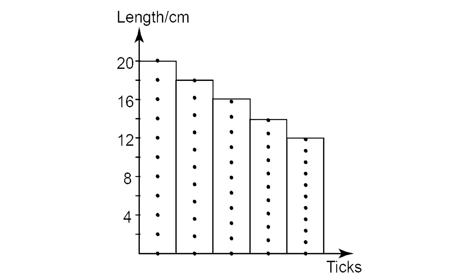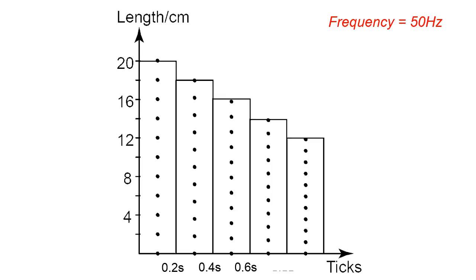The frequency of the vibrating pin is set at 50 Hz, and so each 10 ticks is 0.2 seconds. We label the time on the x-axis as 0.2 seconds, 0.4 seconds, 0.6, 0.8, and 1.0 seconds.